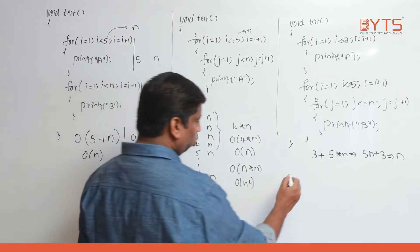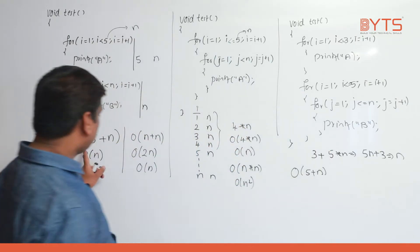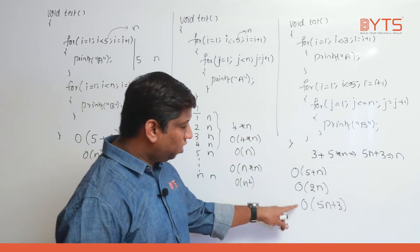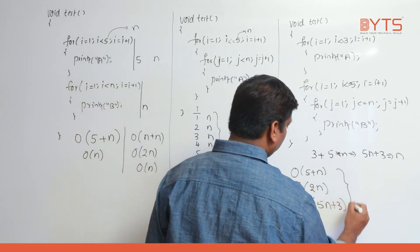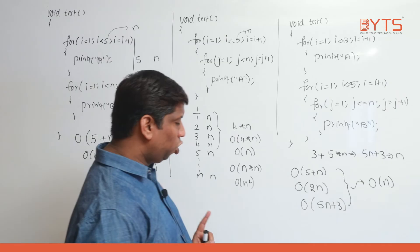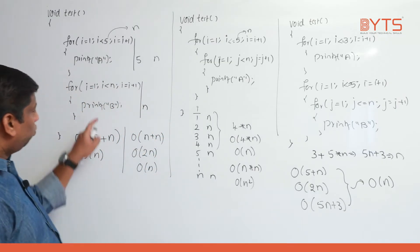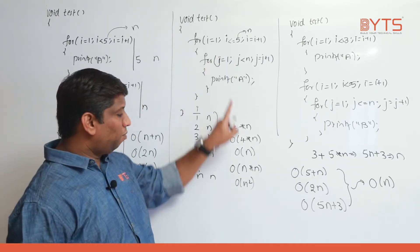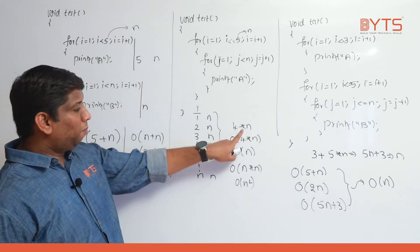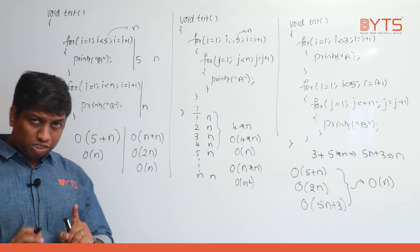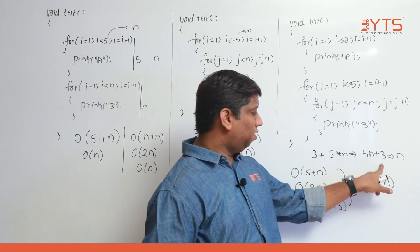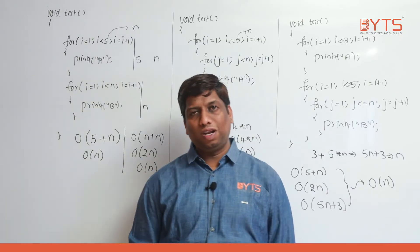5n plus 3 is nothing but O of n. O of 5 plus n, O of 2n, O of 5n plus 3 — all of these are converted to equivalent O of n, because 5, 2, and 3 are all constants. The time complexity of this program is O of n. This function will strictly execute 5n plus 3 times, but we approximate it to O of n because we are finding approximate time, not exact time.